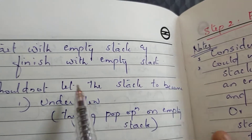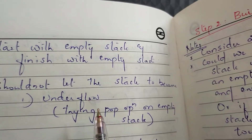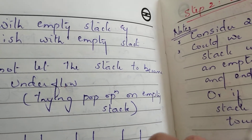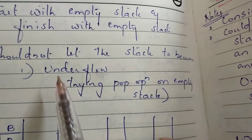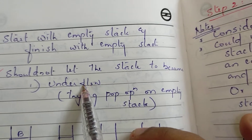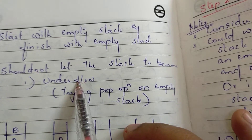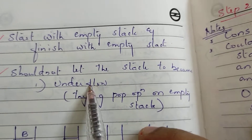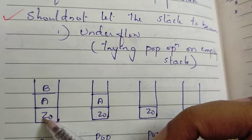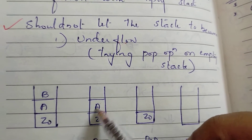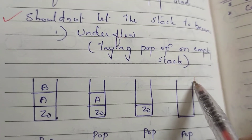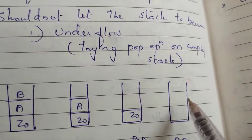Now we will find the two conditions: underflow and overflow. When we study data structures, check the stack — underflow and overflow. Underflow is when the stack is empty but we are going to pop. We are not going to pop because the stack is empty, so there is no element. So underflow means we try to pop from an empty stack.